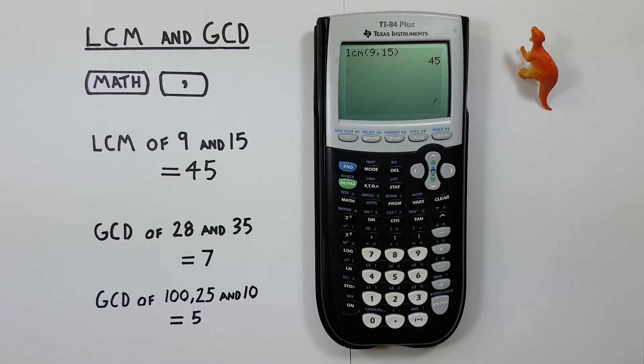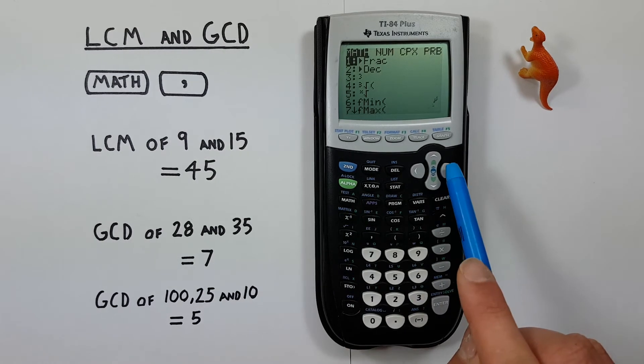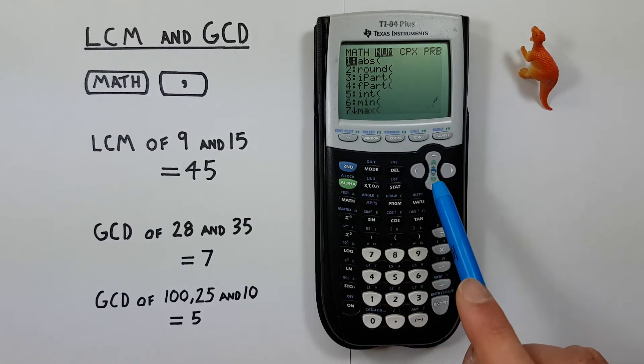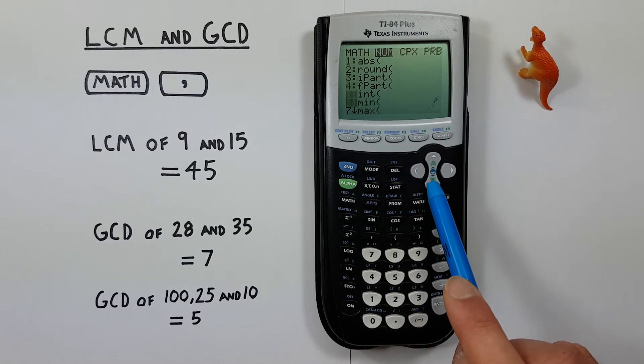We can do GCD the same way. Let's say we're given find the GCD of 28 and 35. We start by pressing math, scroll over to the num menu there, and then if we scroll down,